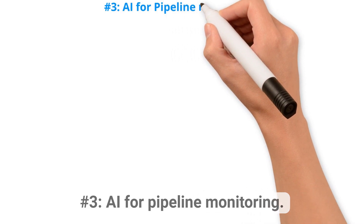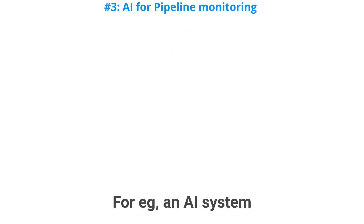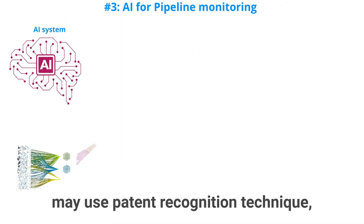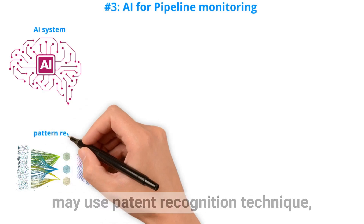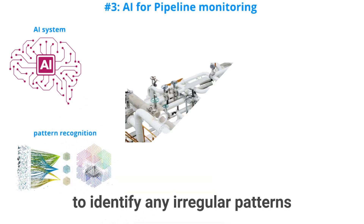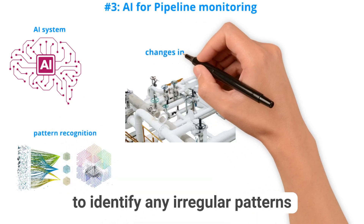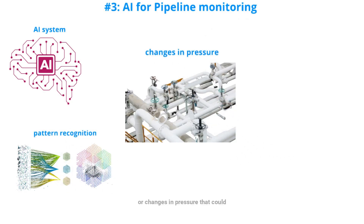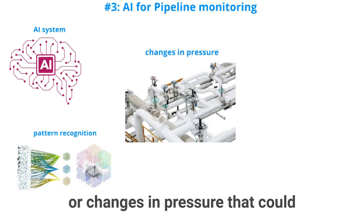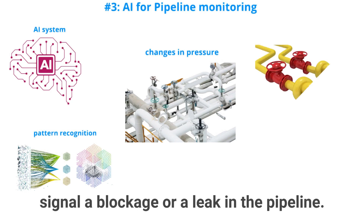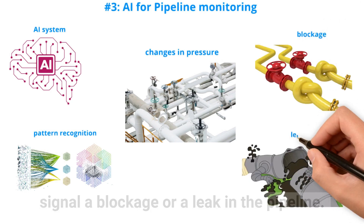Number three: AI for pipeline monitoring. For example, an AI system may use pattern recognition techniques to identify any irregular patterns or changes in pressure that could signal a blockage or a leak in the pipeline.